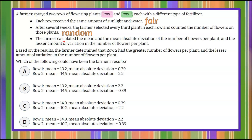The farmer took that data and calculated the mean and the mean absolute deviation. When we talk about the mean, we're talking about the number of flowers per plant on average. Row two is told to have a greater number of flowers per plant, which represents the mean, and the lesser amount of variation. So that means row two had the smaller amount of variation — that is our MAD.